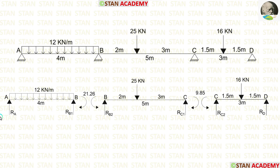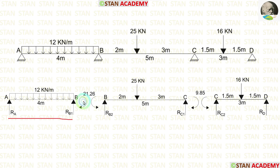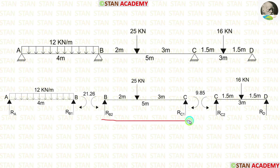Now we are going to calculate the reactions. For calculating the reactions, we have to separate the beam into its spans: AB, BC, and CD. In span AB, MB will be acting in the clockwise direction. In span BC, MB acts in the anti-clockwise direction and MC acts in the clockwise direction. In span CD, MC acts in the clockwise direction.